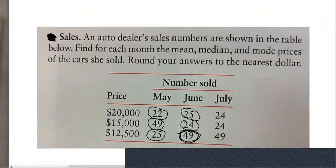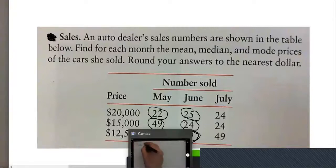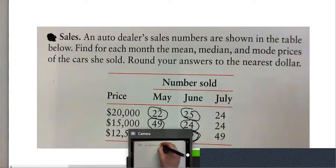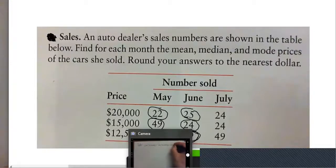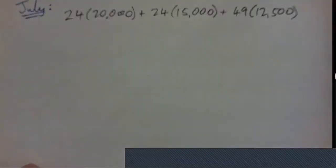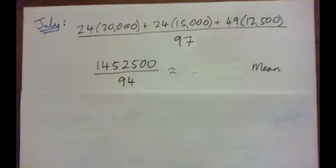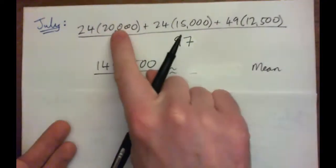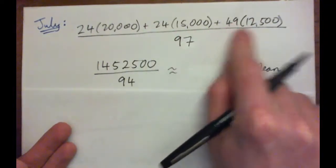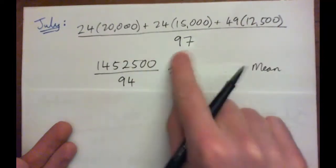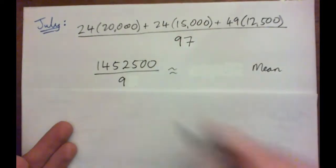Now let's look at July. Press pause and try it yourself first, then check the video. For July: 24 cars sold for $20,000, 24 cars sold for $15,000, and 49 cars sold for $12,500. The total is 97 cars. Revenue comes to $1,450,500.